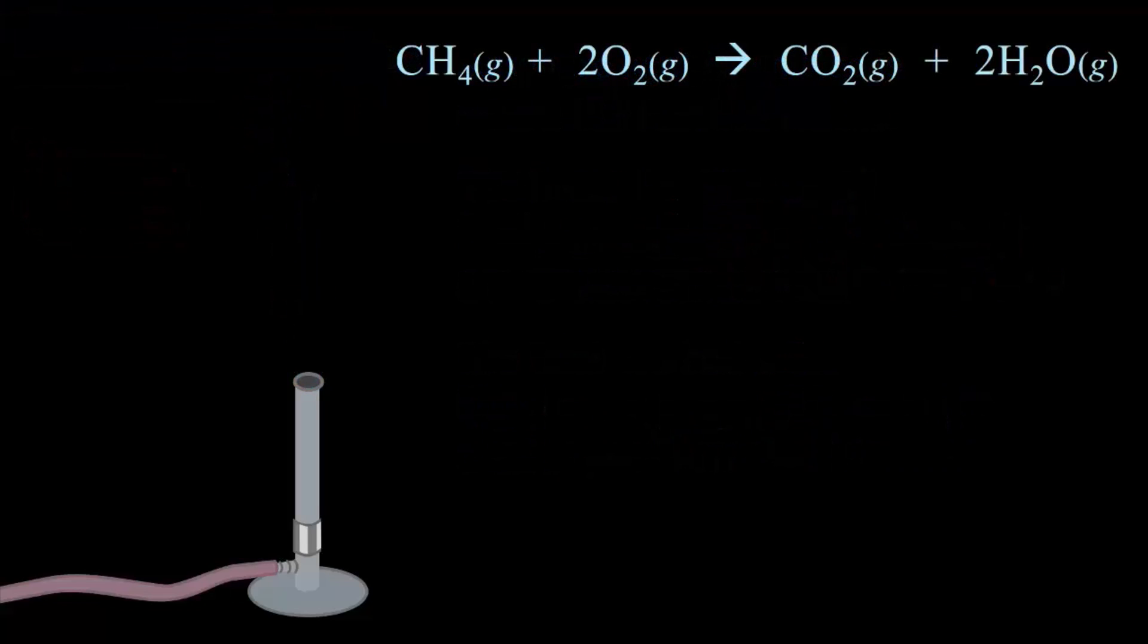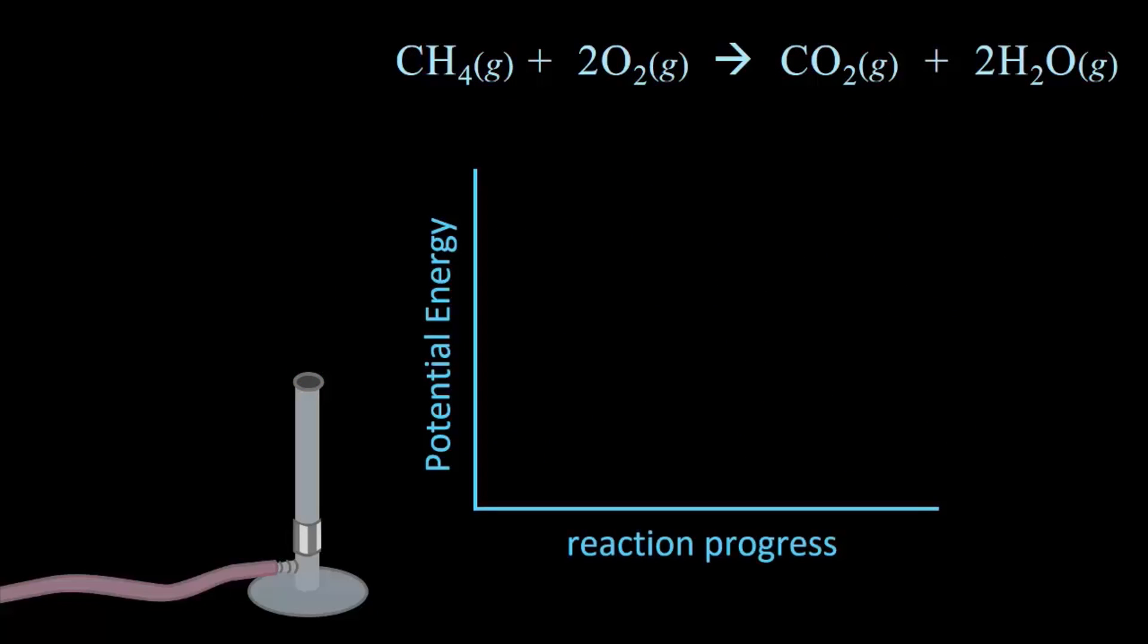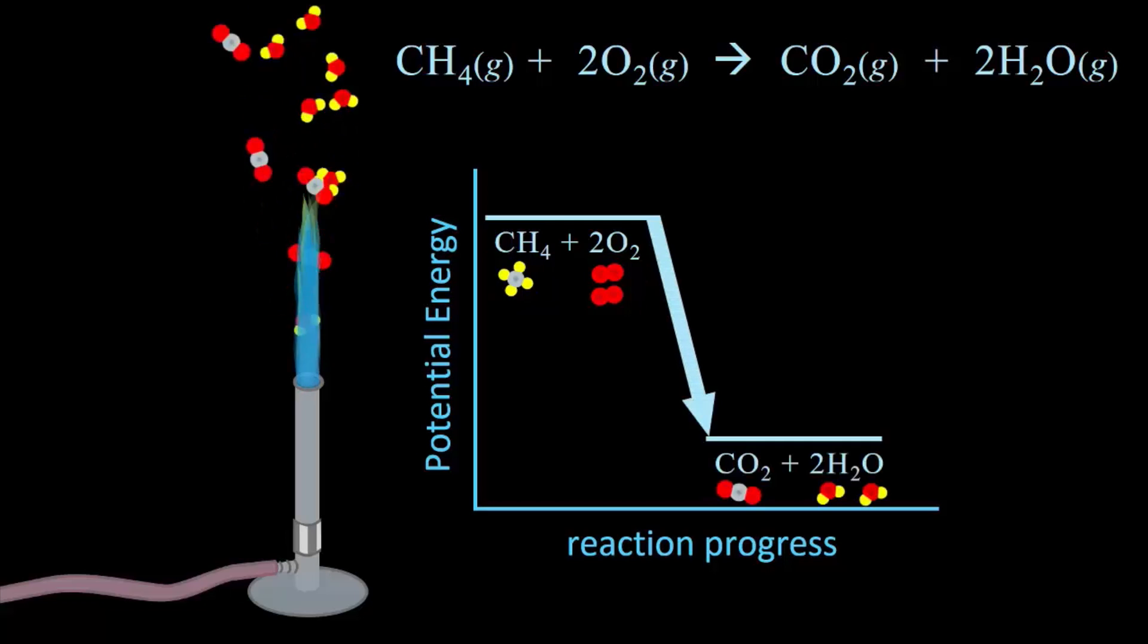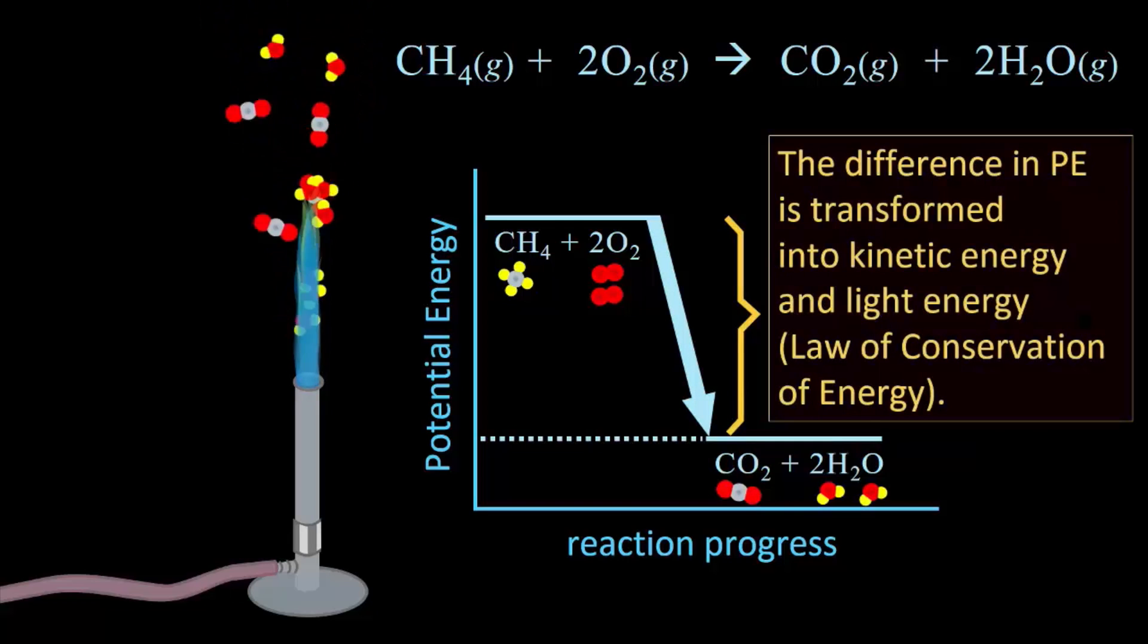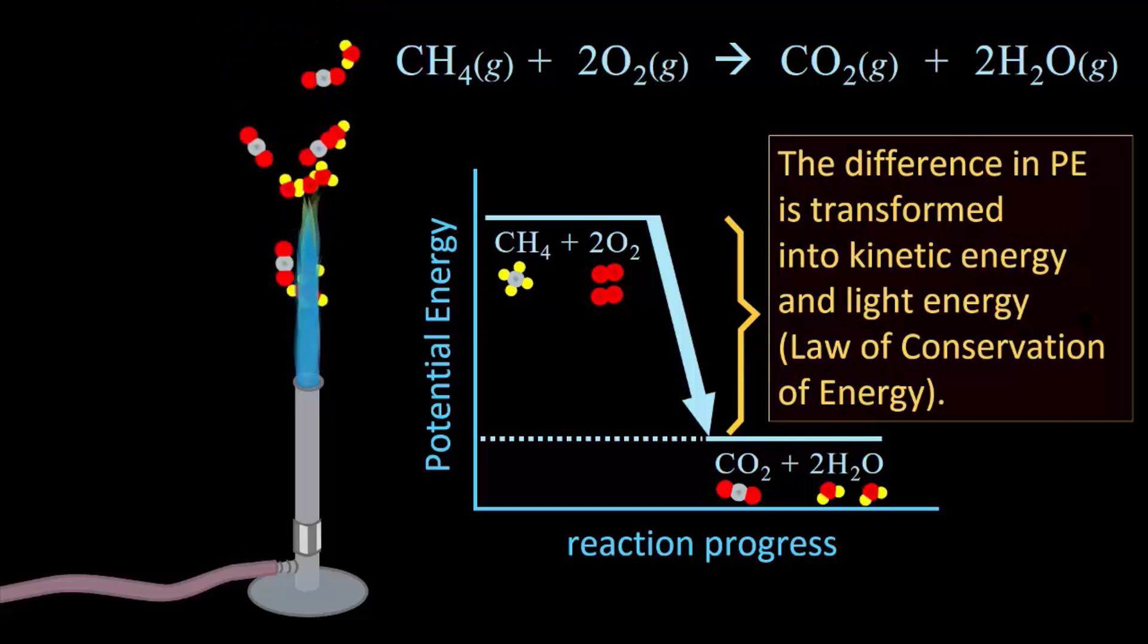Before moving on, let's get a quick summary of what's going on here. We have high potential energy, CH4 and O2, producing low potential energy, CO2 and H2O. That difference in potential energy is transformed into kinetic energy and light energy. The total energy does not change. Our reaction obeys the law of conservation of energy.